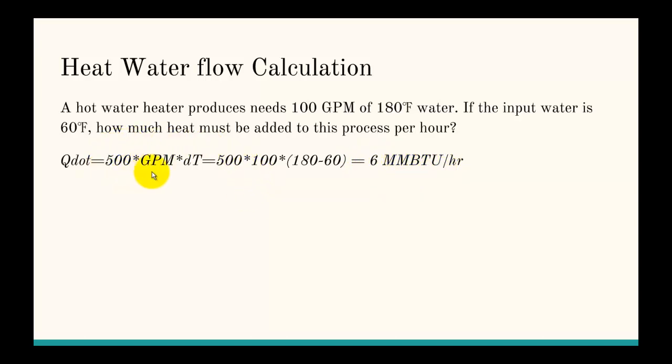The equation is 500 times GPM times delta T. If we have a water flow, we get a heat flow per hour. We just input all the variables in there and we get our answer.